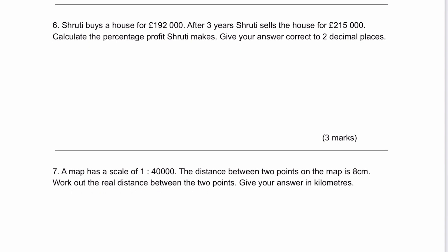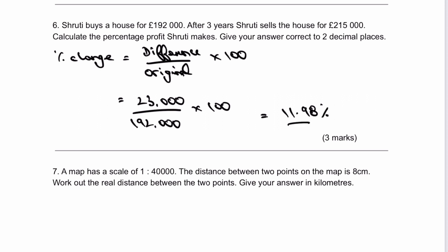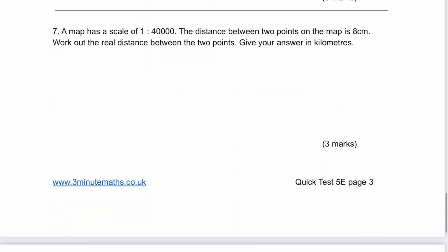Question 6: Shruti buys a house for £192,000, then sells it after 3 years for £215,000. What's her percentage profit? Percentage change equals the difference divided by the original, times 100. The difference between £215,000 and £192,000 is £23,000. The original price was £192,000. Put that in a calculator, multiply by 100, and that gives us, to two decimal places, 11.98%. If you're not sure about anything, always leave a message below and I'll put you towards a playlist with more examples.